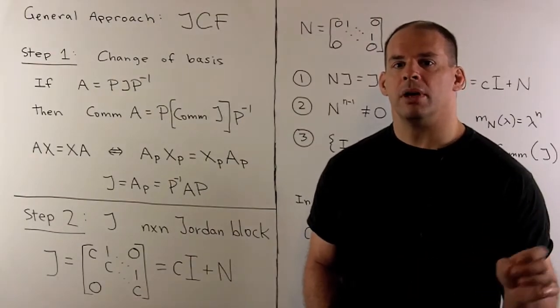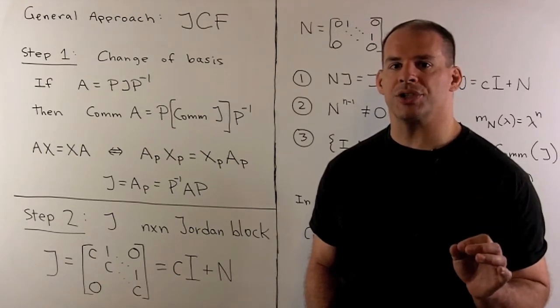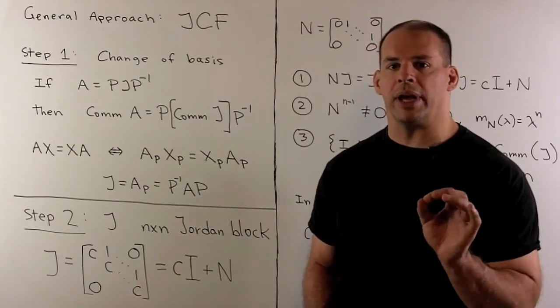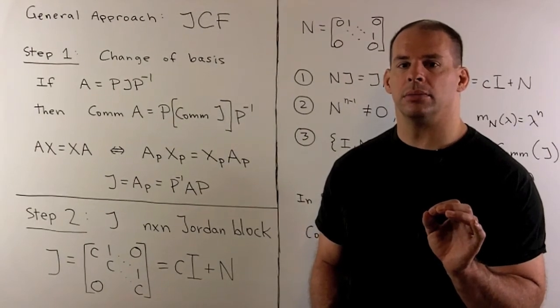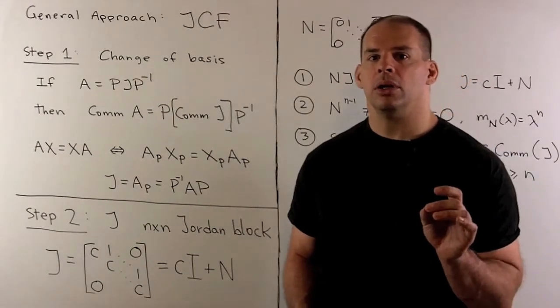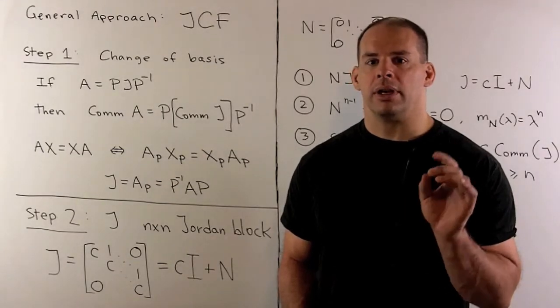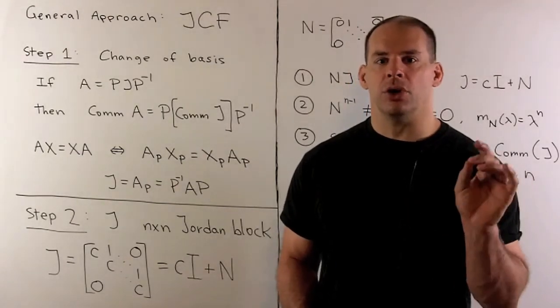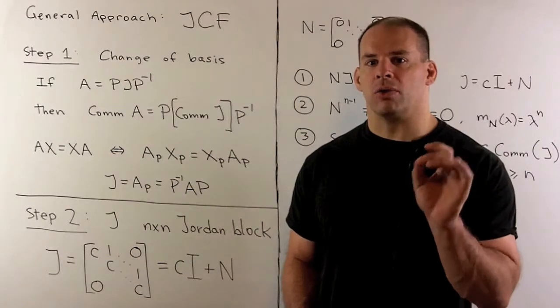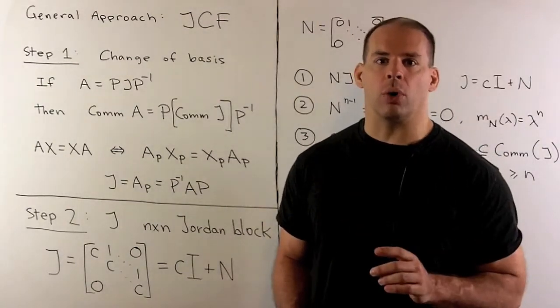So if our minimal polynomial equals our characteristic polynomial, we get our result without doing any computation. In general, we use Jordan canonical form. Now, our first step is to note it's enough to consider our result only for matrices that are already in Jordan form.